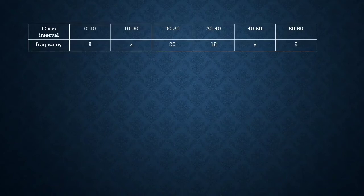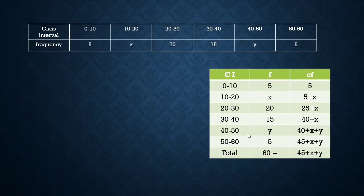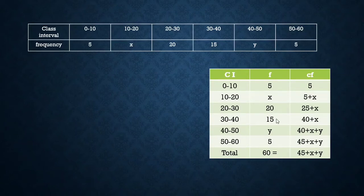In Question 2, if the median of a distribution is 28.5, find the values of x and y. Class intervals are 0–10 (freq 5), 10–20 (freq x), 20–30 (freq 20), 30–40 (freq 15), 40–50 (freq y), 50–60 (freq 5). The total of all frequencies is given as 60, so n = 60.